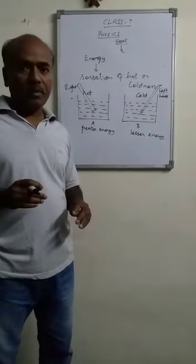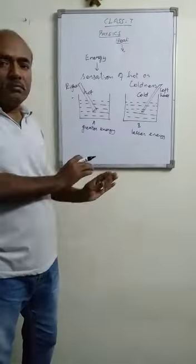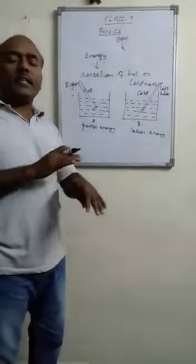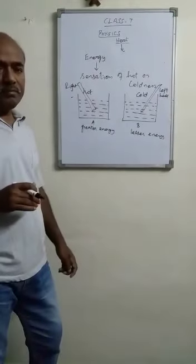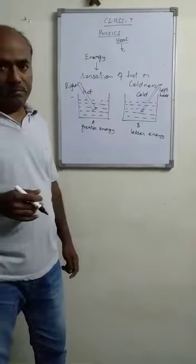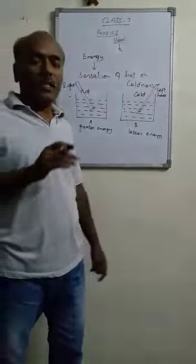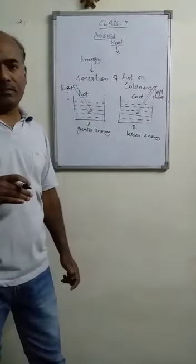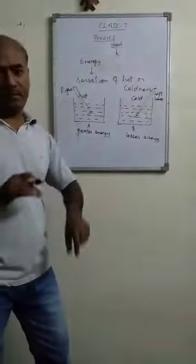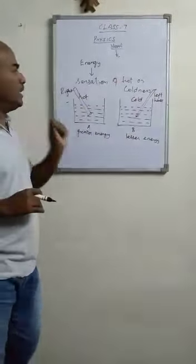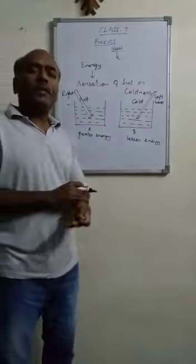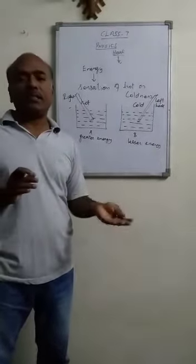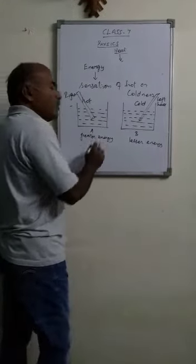We see that the right hand is feeling hotter. It is because the energy of particles in the hot water is greater than the energy possessed by our hand, so we feel hotter. The left hand feels colder because the energy possessed by the cold water — the energy of particles possessed by cold water — is less than the energy possessed by our hand. That's why we feel cold in the left hand. And why do we feel hot or cold? This is because of the difference in energy, and how this hotness or coldness is felt is because energy has one special property.